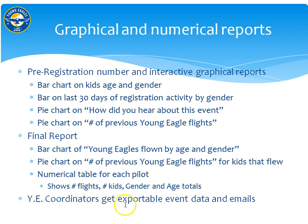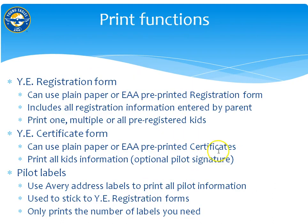Young Eagle coordinators also get exportable event data and emails so they can put them into an existing tracking system. In terms of print functions, you have a Young Eagle registration form — all of these can use plain paper or the EAA pre-printed registration form. It includes all the registration information entered by the parent, and you can print one, multiple, or all of the pre-registered kids. For example, if you have an event on Saturday morning you can pre-print all the registration forms Friday afternoon and they'll be ready when the parents and kids show up.